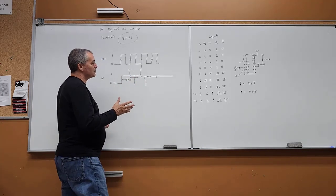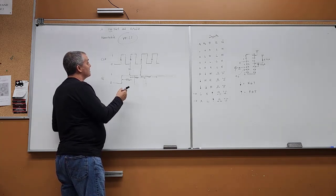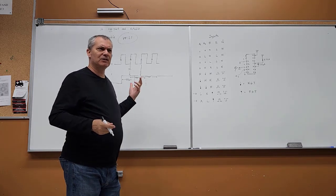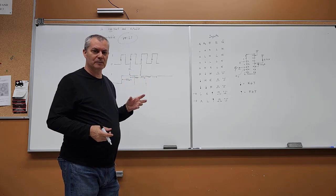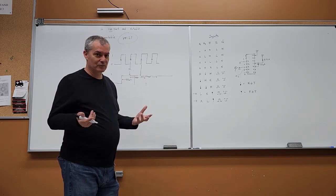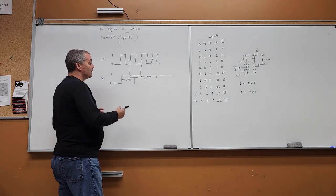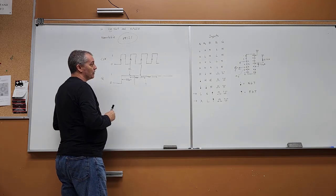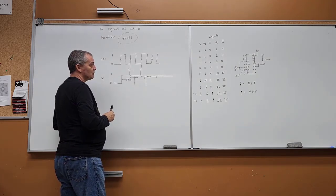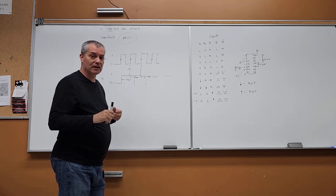The 74121 in your lab is non-retriggerable. The lab asks you to determine this experimentally — the easiest way is to check the data sheet, but you can also observe it on the oscilloscope. Now we're going to go to the oscilloscope for a quick demo of what that actually looks like.